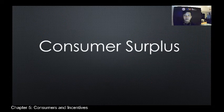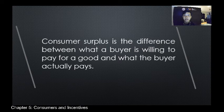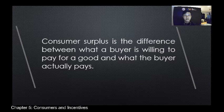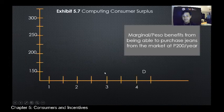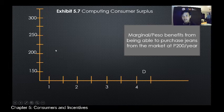Consumer surplus is the difference between what a buyer is willing to pay — shown by Mylene's demand curve — and what the buyer actually pays, which is the set market price. We're going to identify the possible revenue versus the actual revenue, and then compute the consumer surplus. The market price is 200 pesos, which is the competitive equilibrium price. We will identify the height of Mylene's demand curve relative to the market price.